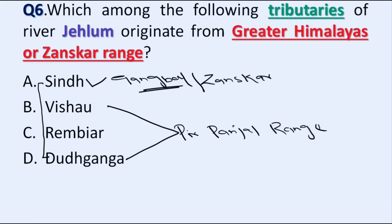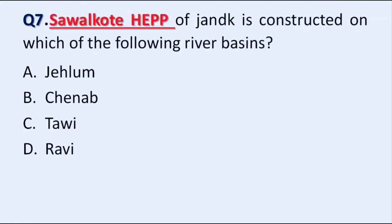Our next question is: the Salal/Baglihar hydroelectric power project of Jammu and Kashmir is constructed on which river basin? Option A: Jhelum, B: Chenab, C: Tawi, D: Ravi. Correct answer is Option B, Chenab. The Savalkot power project is constructed on River Chenab.